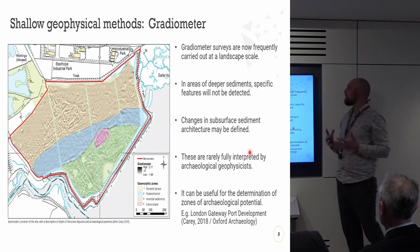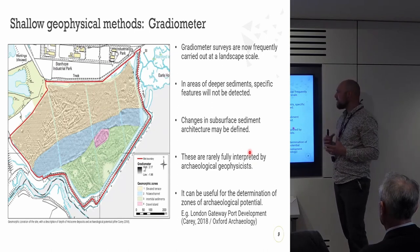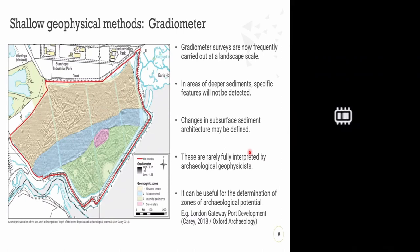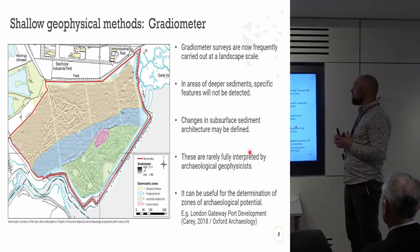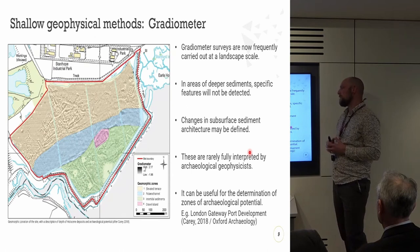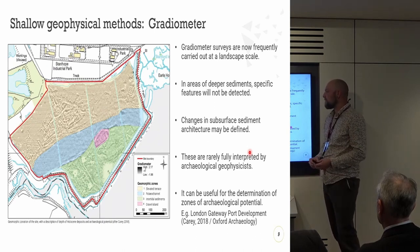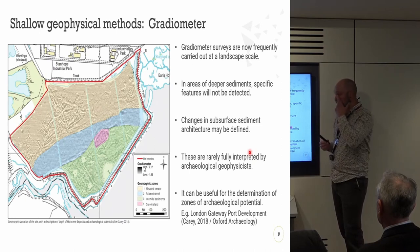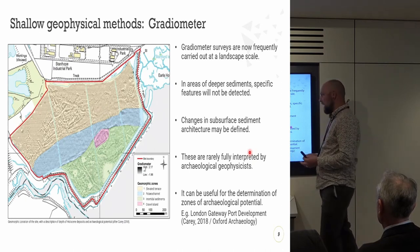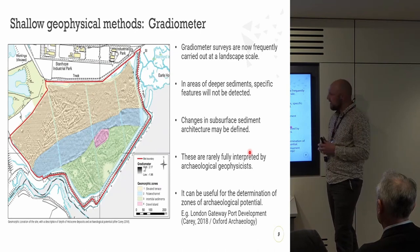As Andy alluded to, we're now carrying out gradiometer surveys at an unprecedented scale — working at a landscape scale with hundreds of hectares collected. While some may be inappropriately deployed within floodplain settings, we can start to delineate some features not fully interpreted by archaeological geophysicists — not necessarily looking for specific archaeological features, but for slightly different variations in the background response of certain regions, which we can relate to alluvial landforms. This example from the London Gateway development shows four different geomorphic zones highlighted, each with a variable archaeological and paleo-environmental preservation capacity: the terrace acting as a likely area for archaeological activity, while paleo-channels are more likely to contain paleo-environmental remains.